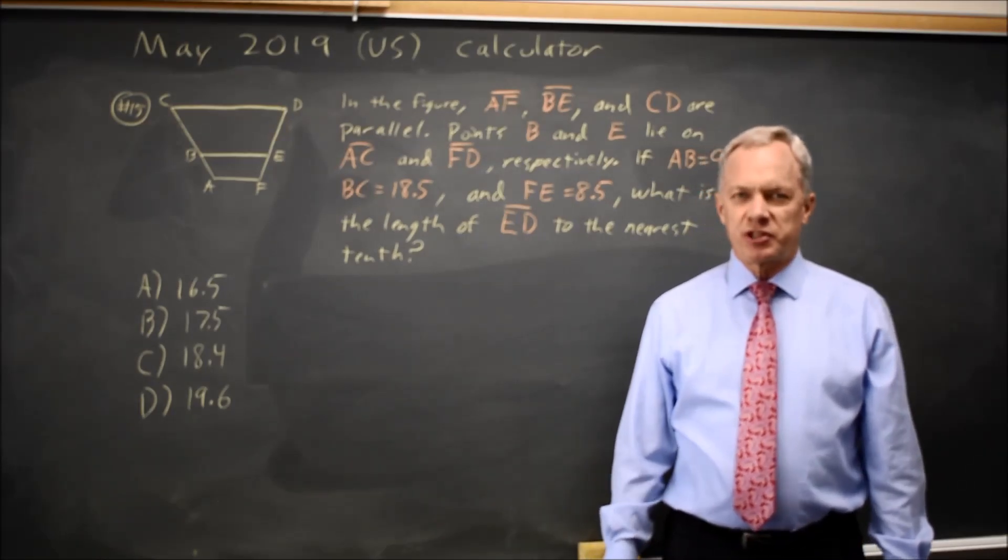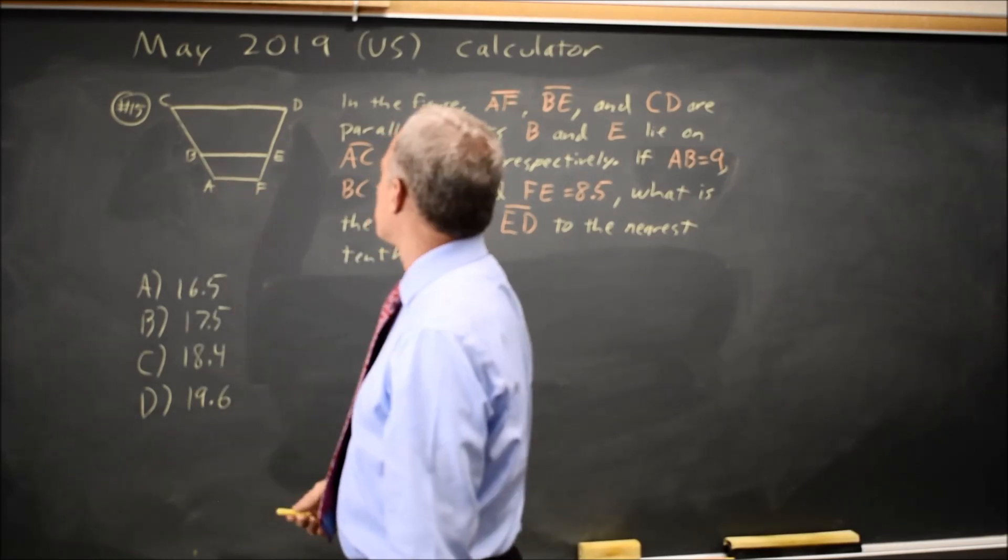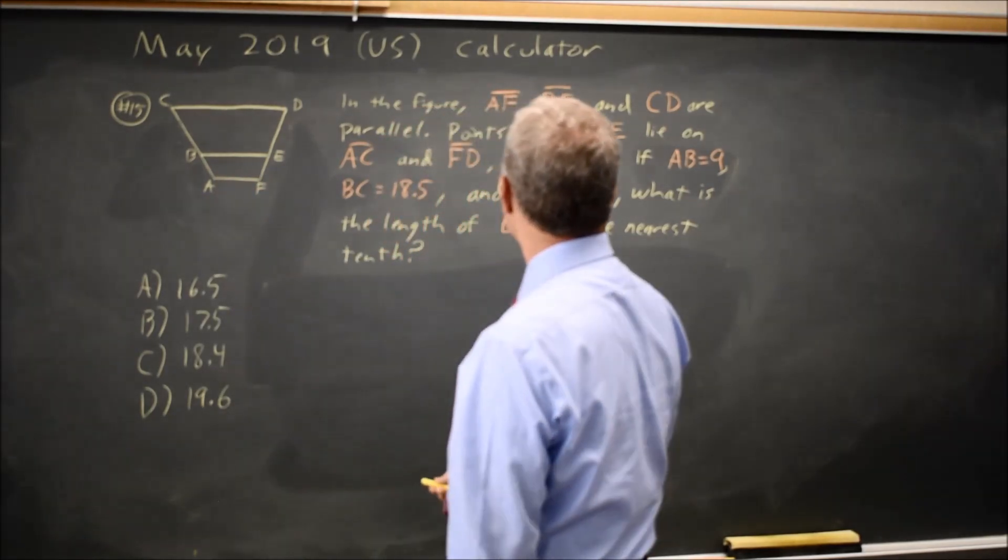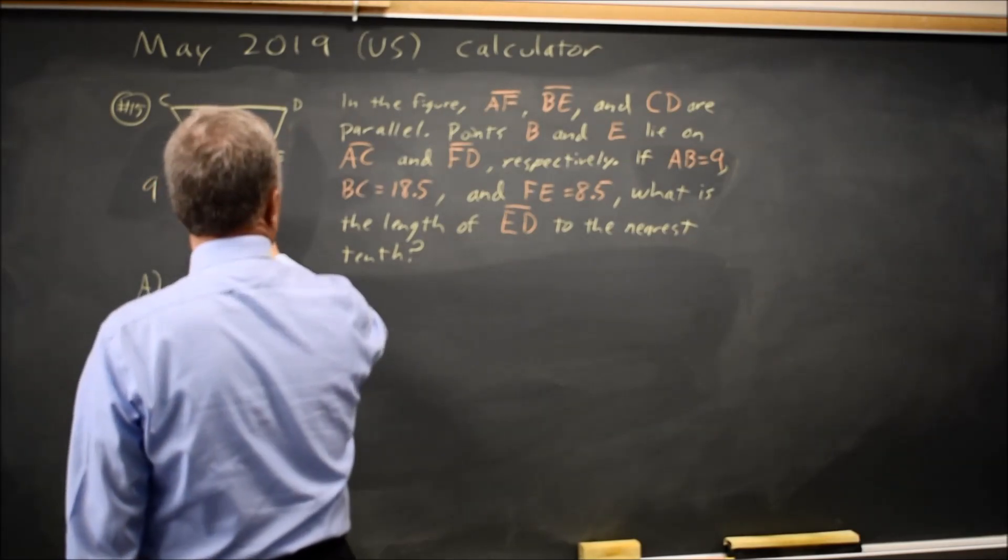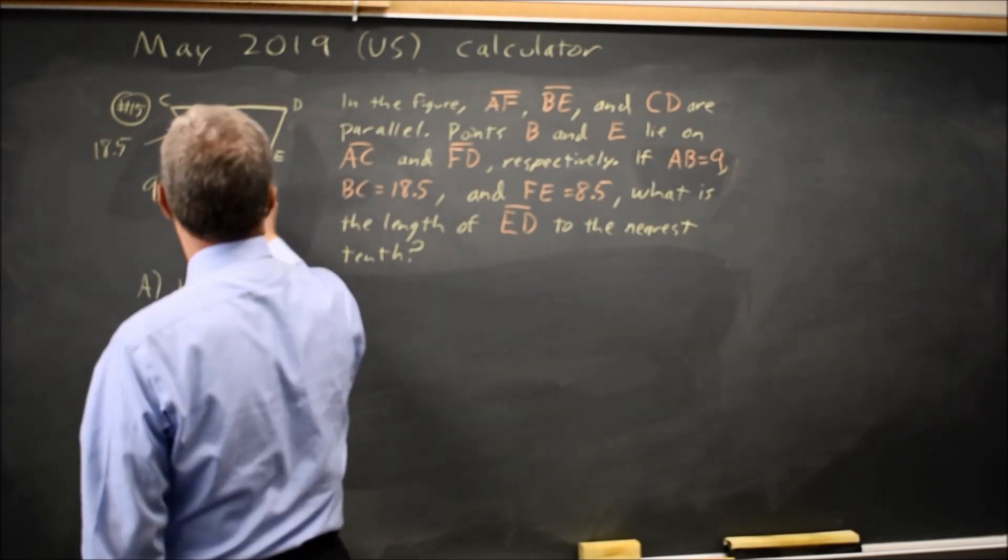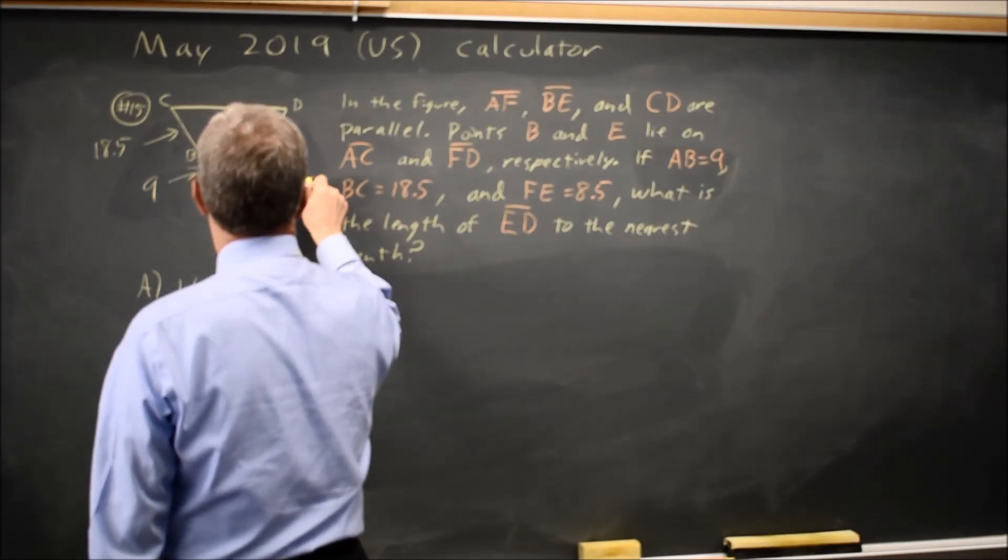This is calculator question number 15. The College Board gives us a diagram where CD, BE, and AF are parallel lines, and they tell us that length AB is 9, length BC is 18.5, length FE is 8.5